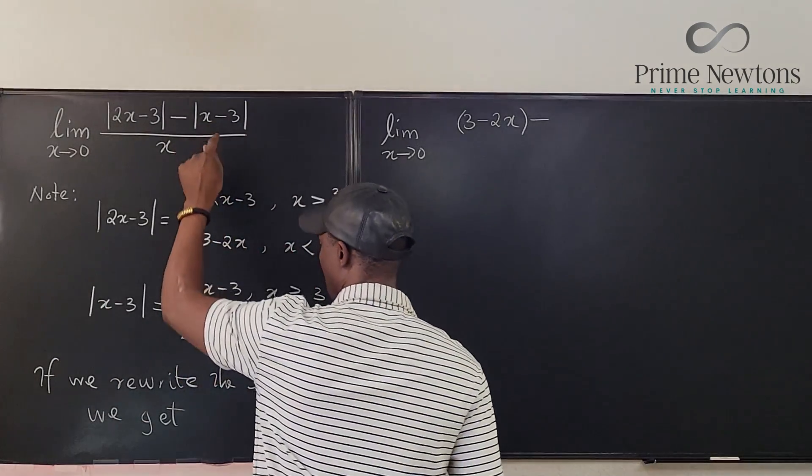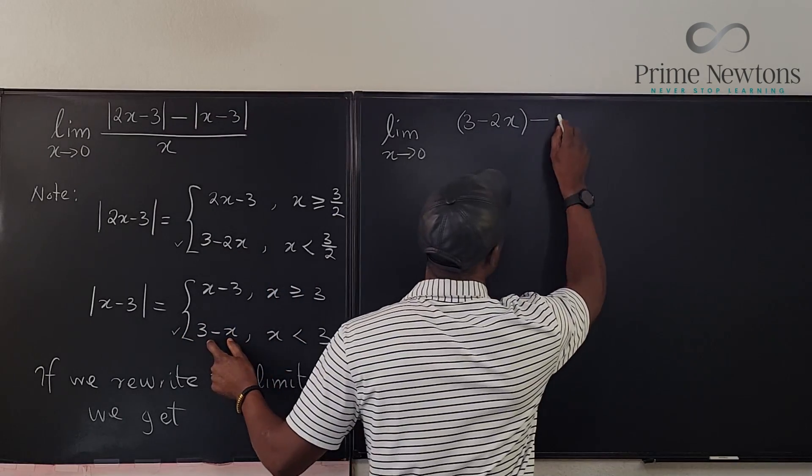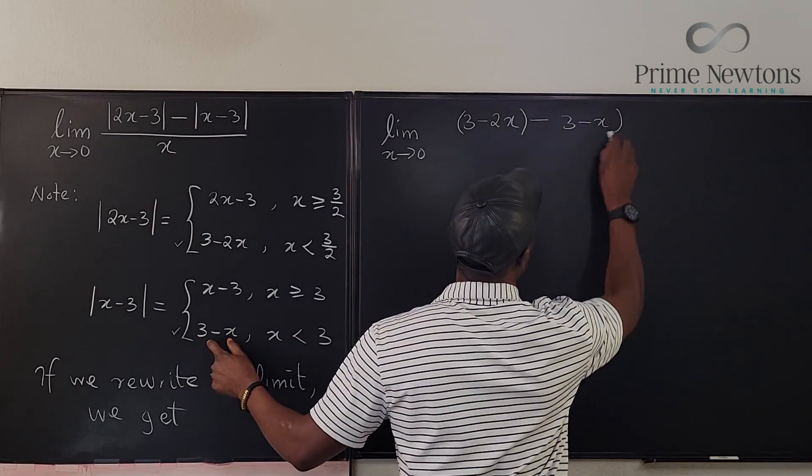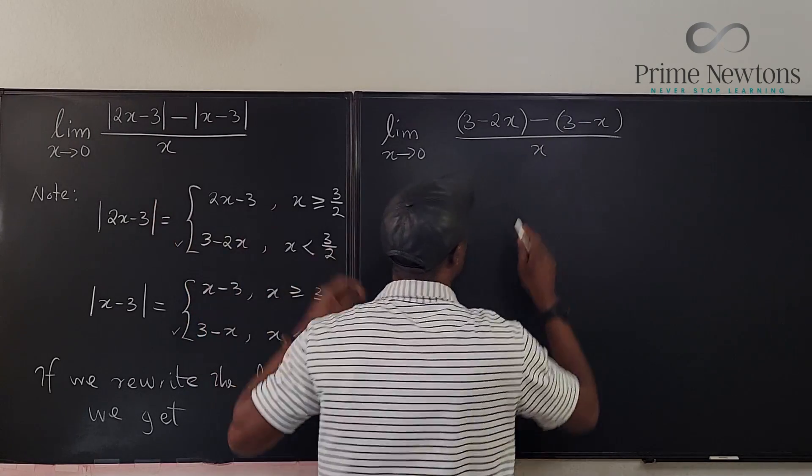We go to this part. We're going to be using the lower one because that's what's relevant. We got 3 - x. And everything is divided by x.